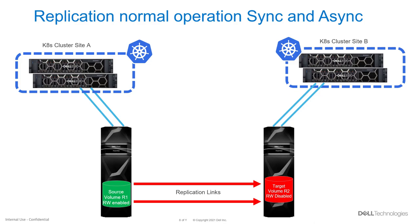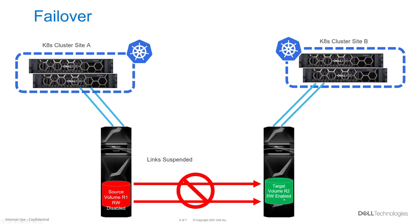In the next diagram, I'm going to show the sequence of operations just mentioned. During normal operation, the Dell CSI Replicator Module provisions the volume and makes it available to the workload. The volume on site A is writable, the replication link is put in place, and the volume on site B is read-only. In case something happens — a planned or unplanned failover — the volume from site A is made read-only and the volume on site B is made available to the cluster on site B.